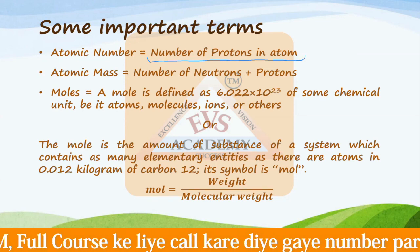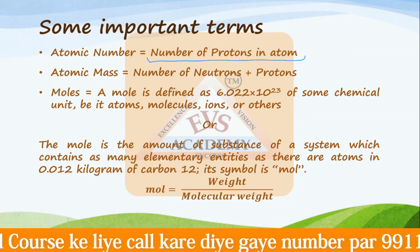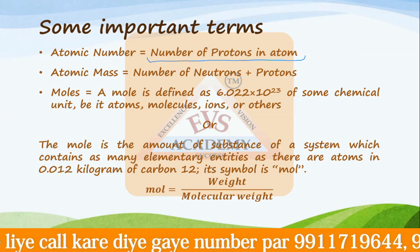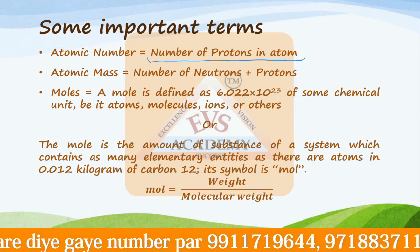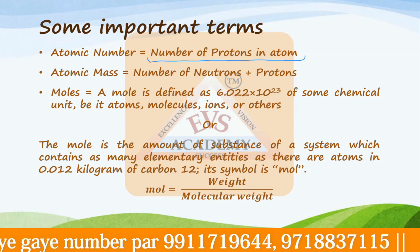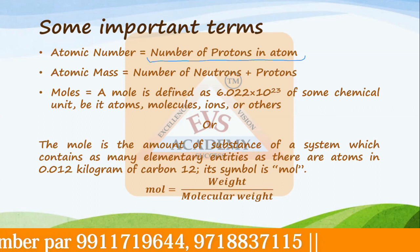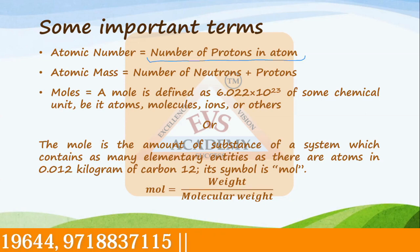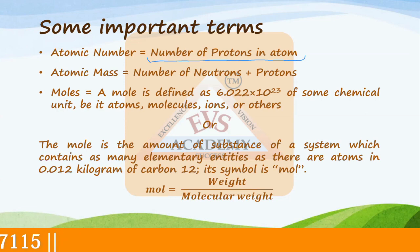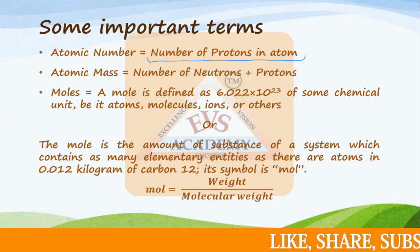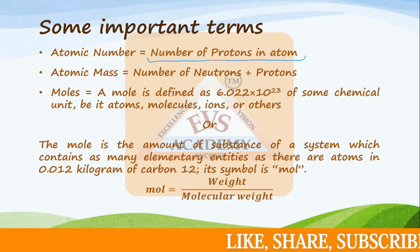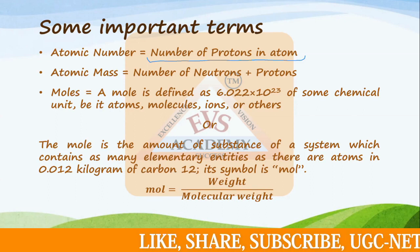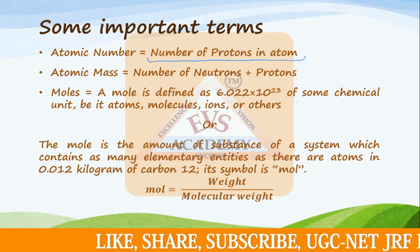For example, if there are 10 protons present, the atomic number of that element would be 10. Similarly, if there are only 2 protons present in the nucleus, the atomic number would be 2. Irrespective of the number of electrons or neutrons, we only look at the number of protons — that is the atomic number.